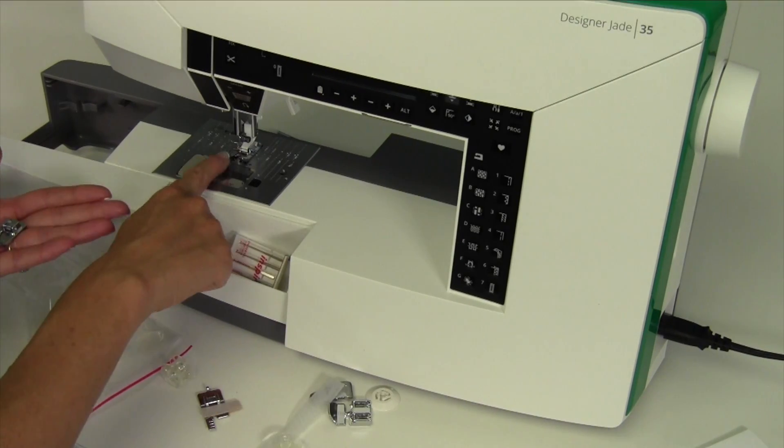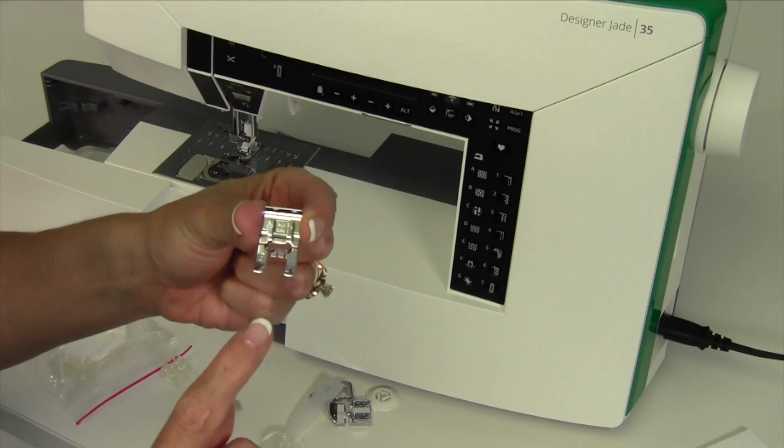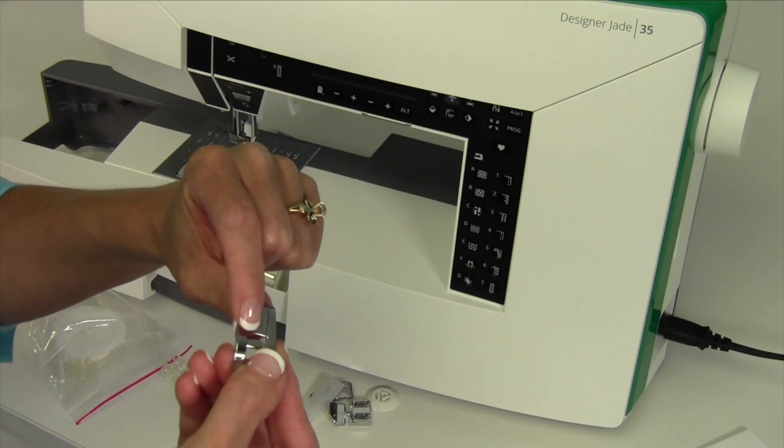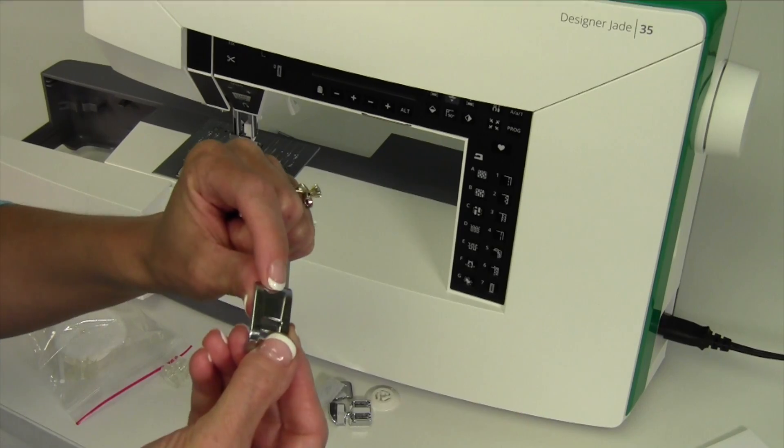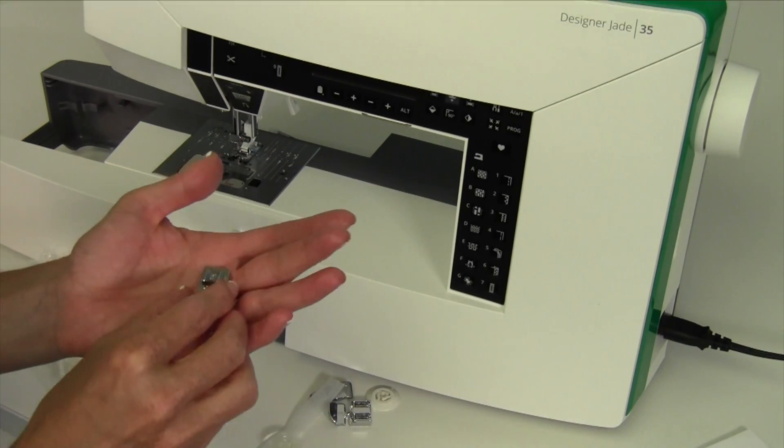The foot that comes on the machine is your standard foot and it's lettered A. Your B foot is going to be for all of our decorative stitches because it's got a little thicker cutout behind the foot and then that way those thicker stitches will not get hung up as it's being sewn.